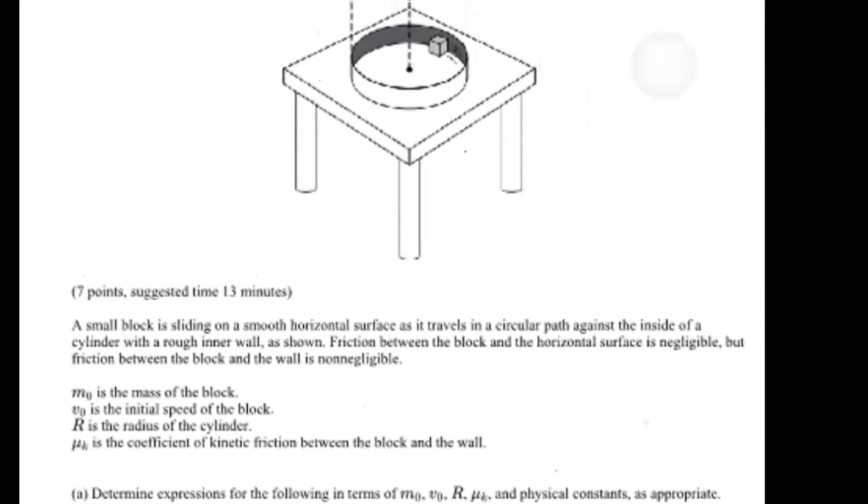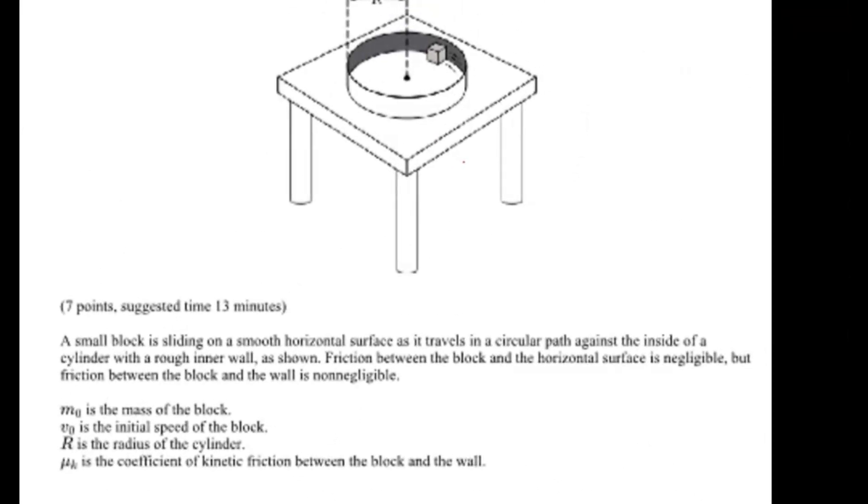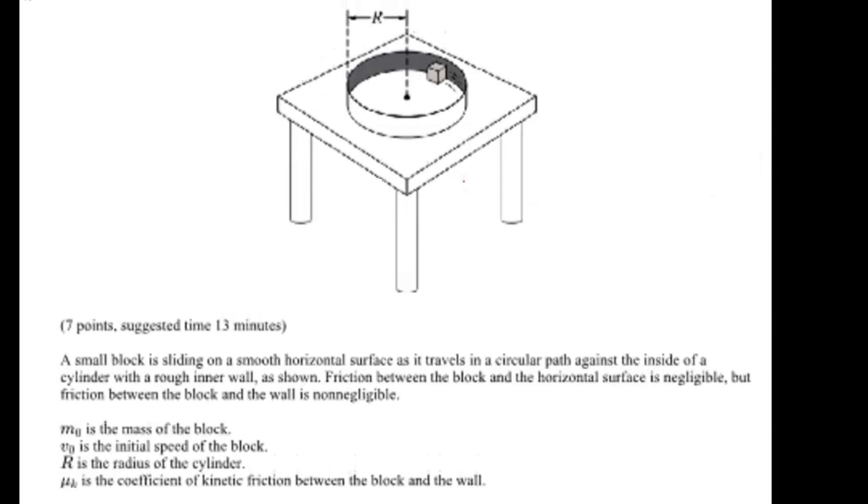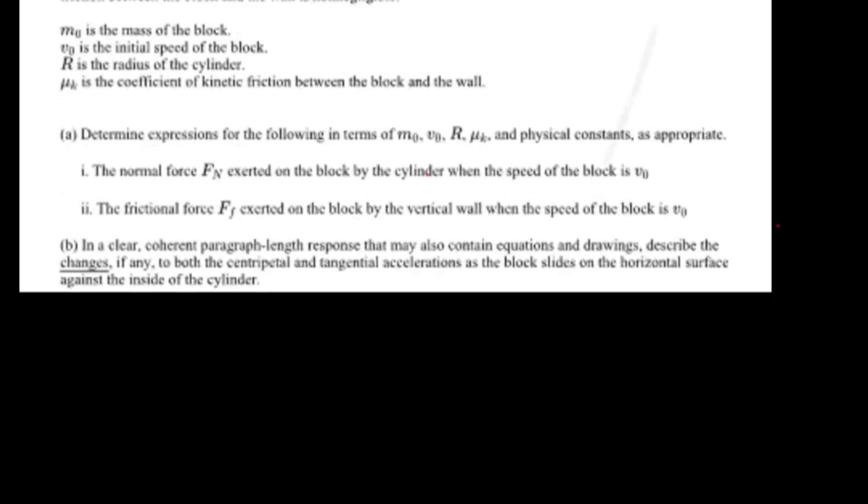So this problem is saying a small block is sliding on a smooth horizontal surface as it travels in a circular path against the inside of a cylinder with a rough inner wall as shown. So there's no friction between the block and the horizontal surface, but there is friction between the block and the vertical wall.